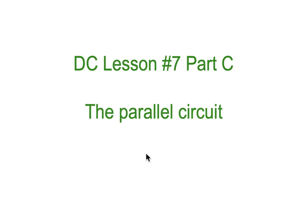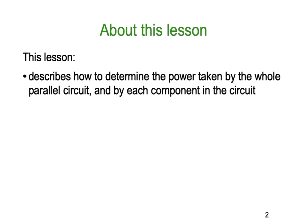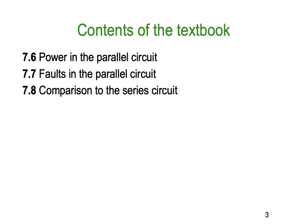G'day and welcome to DC lesson number 7 part C, our final theory component in parallel circuits. In this lesson we're going to describe how to determine the power taken by a whole parallel circuit and its components. We've done current, we've done resistance, and now power. We'll look at typical faults and their effects in a parallel circuit, similar to what we did in series circuits, using textbook sections 7.6, 7.7, 7.8. We'll also do a comparison table between series and parallel circuits before moving on to combination circuits.